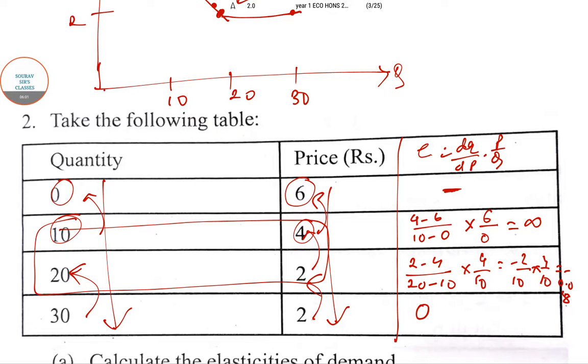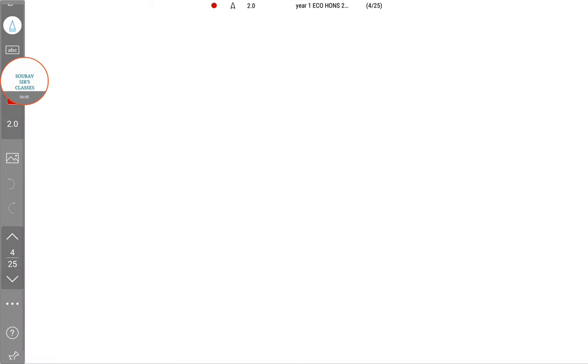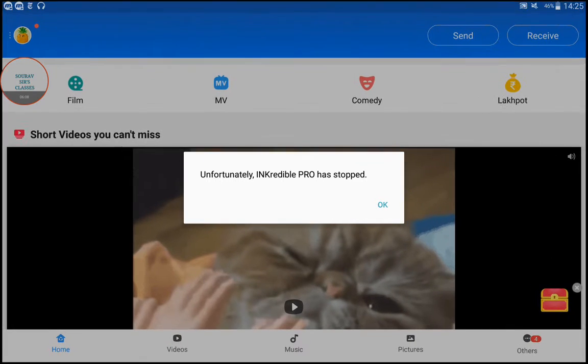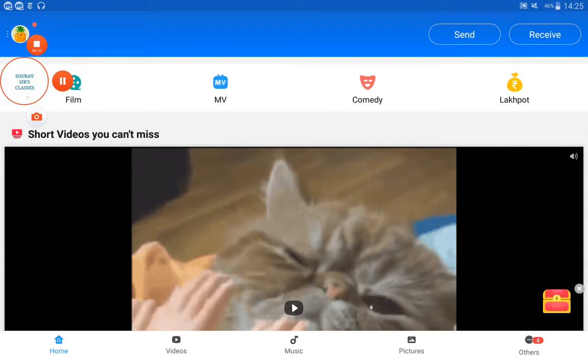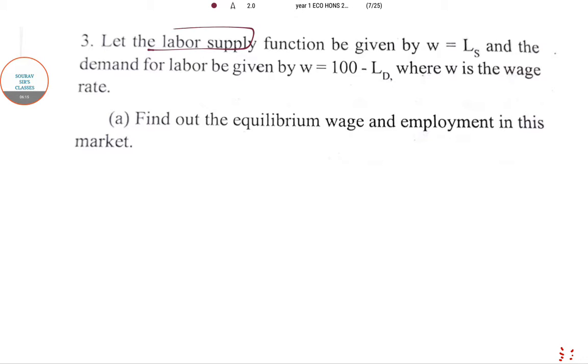Now the next question. Here is a labor supply function. We know at equilibrium labor supply equals labor demand. From the first equation, labor supply is W, labor demand is 100 - W, so W = 50. Equilibrium wage rate is 50 units, and employment at this level, labor demand is 100 - W, that is 50.